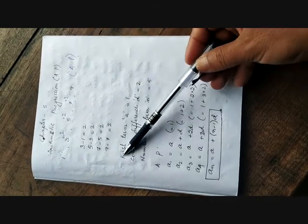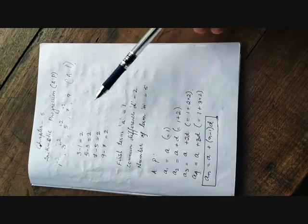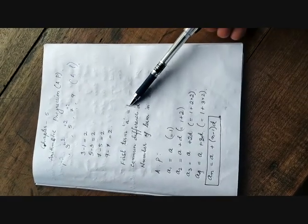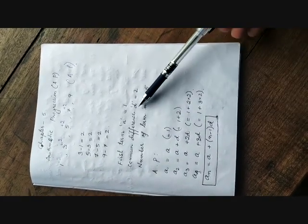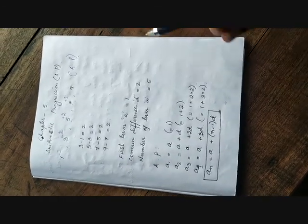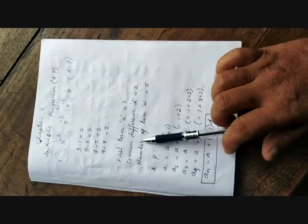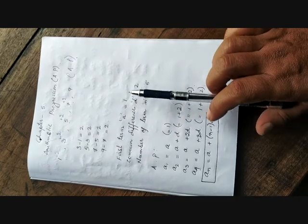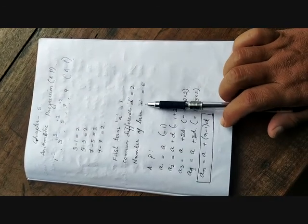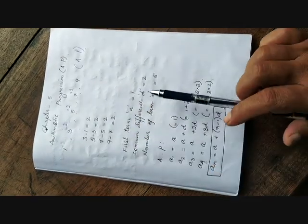Now for the AP, the first term is denoted by the letter a. According to this AP, the first term is 1. The common difference is denoted by the letter D, and according to this AP, the common difference is 2. And the number of terms means how many terms are there in the AP, so it is denoted by the letter n. According to this AP, we have 5 number of terms, that is 1, 2, 3, 4, 5.